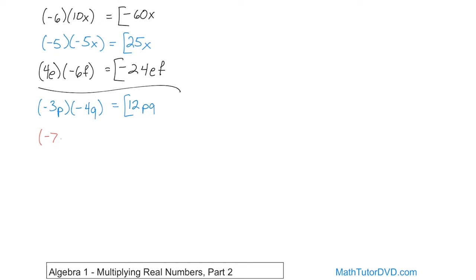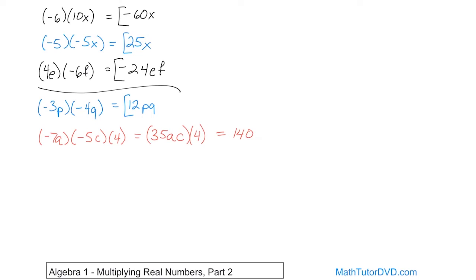What if you had negative 7a times negative 5c times 4? Remember, a and c are just variables. We handle the first two terms first: negative 7a times negative 5c. Negative times negative gives you positive. 7 times 5 is 35, so you get positive 35 times a times c, because those variables are still there. Then you still have to do the multiplication times 4. Positive 35 times positive 4 — you end up with a positive. 35 times 4 is 140, so the answer is positive 140 times a times c.